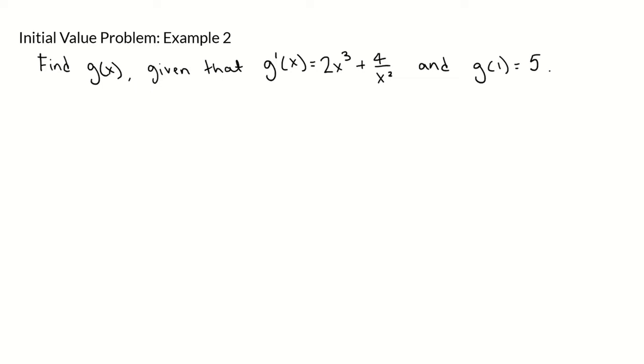In this initial value problem, we're going to find g of x given that g prime of x is equal to 2x to the third plus 4 over x squared, and given the initial condition that g of 1 is equal to 5.